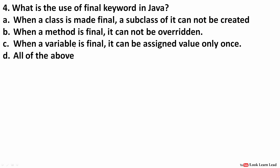Next: what is the use of the final keyword in Java? In Java we have three contexts — a class, a method, and a variable — and the role of the final keyword differs in each. We will discuss what happens when final is used with a class, with a method, and with a variable.